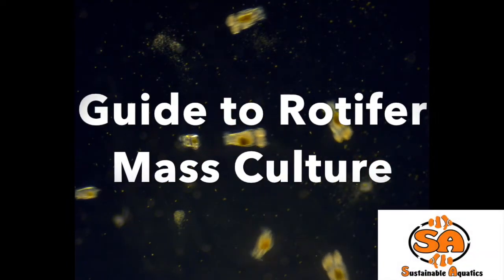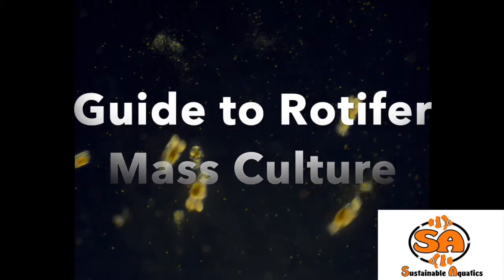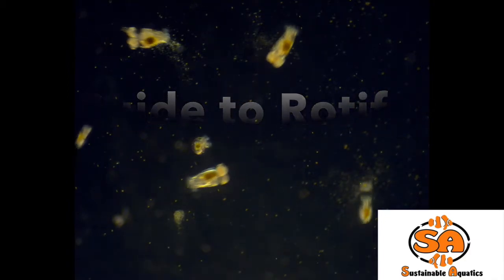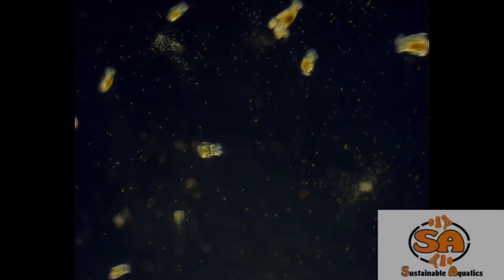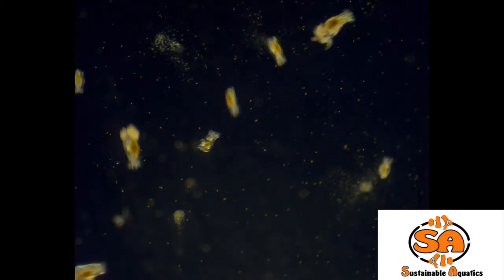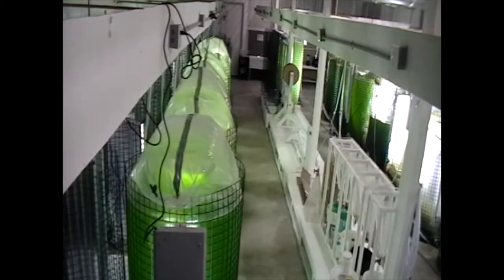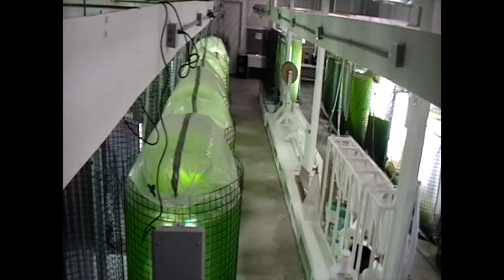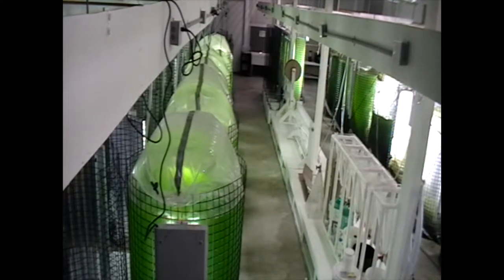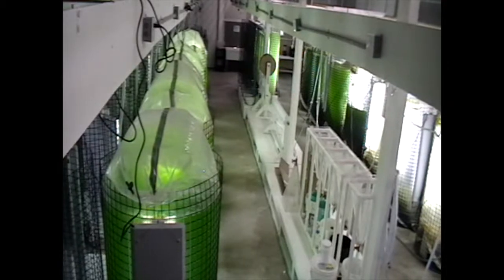Sustainable Aquatics is one of the largest ornamental marine finfish hatcheries in the world. Breeding and rearing dozens of fish species has produced innovations that have broad applicability in aquaculture. One of the core processes in the hatchery at Sustainable Aquatics is the mass production of rotifers as live food.